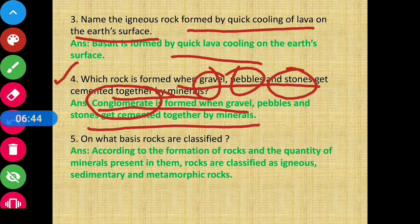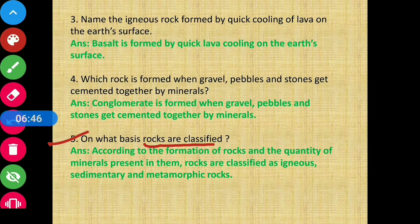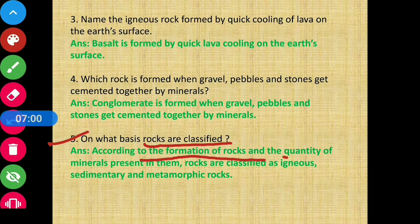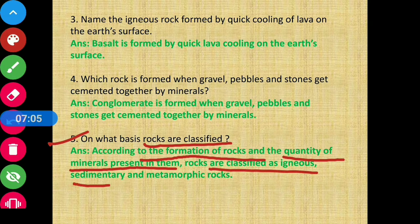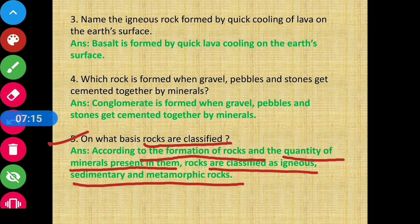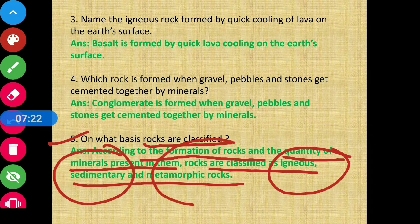Question 5: On what basis are rocks classified? Rocks have three types: igneous, sedimentary and metamorphic. According to the formation of rocks and the quantity of minerals present in them, rocks are classified as igneous, sedimentary and metamorphic rocks.